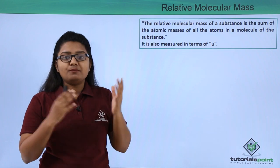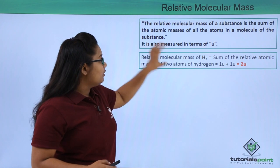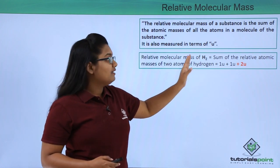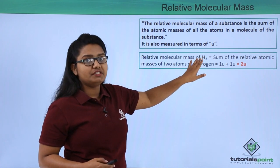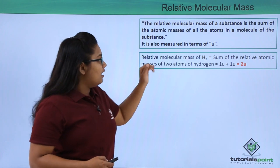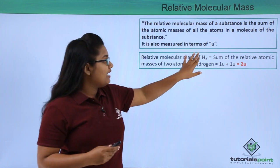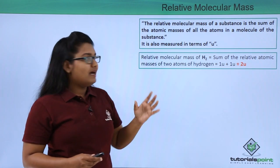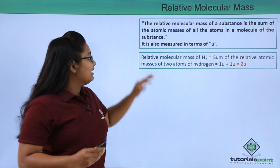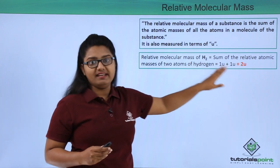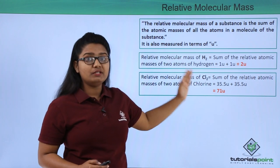The relative molecular mass of a hydrogen molecule is the sum of the relative atomic masses of its two hydrogen atoms. Each hydrogen atom has a relative atomic mass of 1u, so two hydrogen atoms together give 1u + 1u = 2u. Therefore, the relative molecular mass of a hydrogen molecule is 2u.